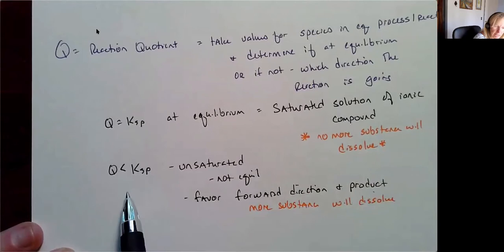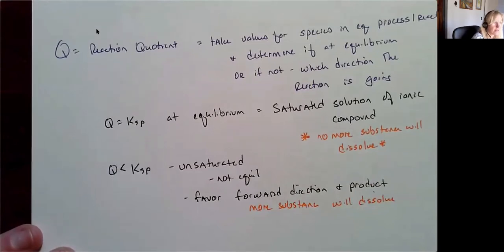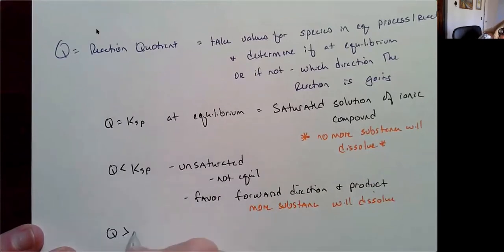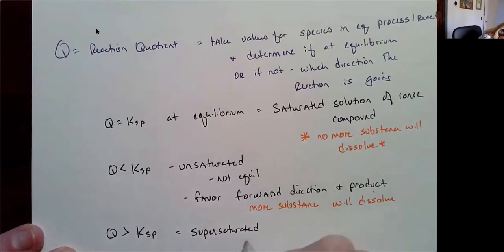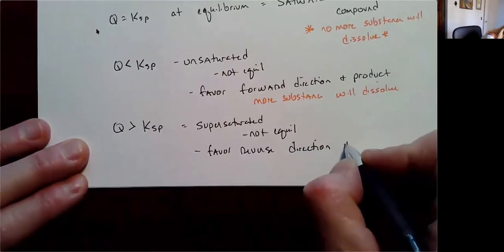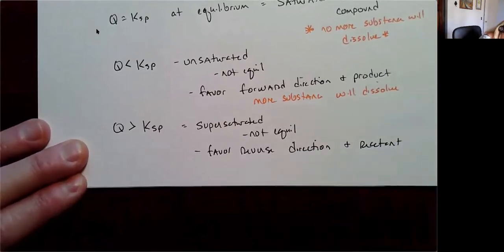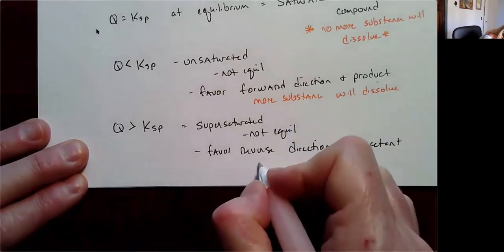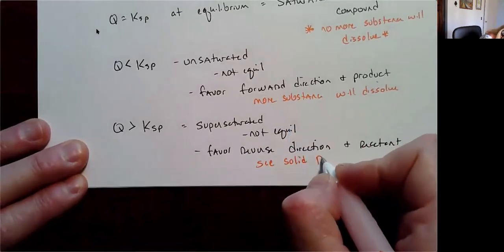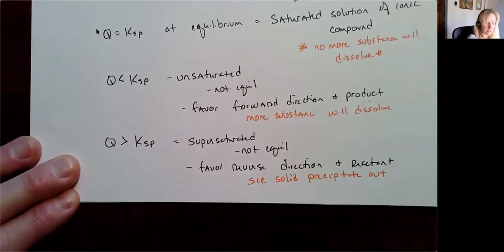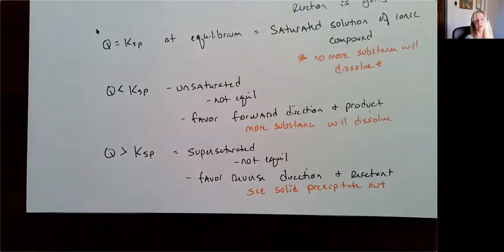If I take something and add it in and I have a Q that's less than Ksp, then whatever I'm adding in is going to be able to dissolve into water. If my Q is greater than my Ksp, now I'm supersaturated. I'm not at equilibrium, and I'm going to favor the reverse direction — my reactant, which in this case is my solid — so I'm actually going to see solid precipitate out.